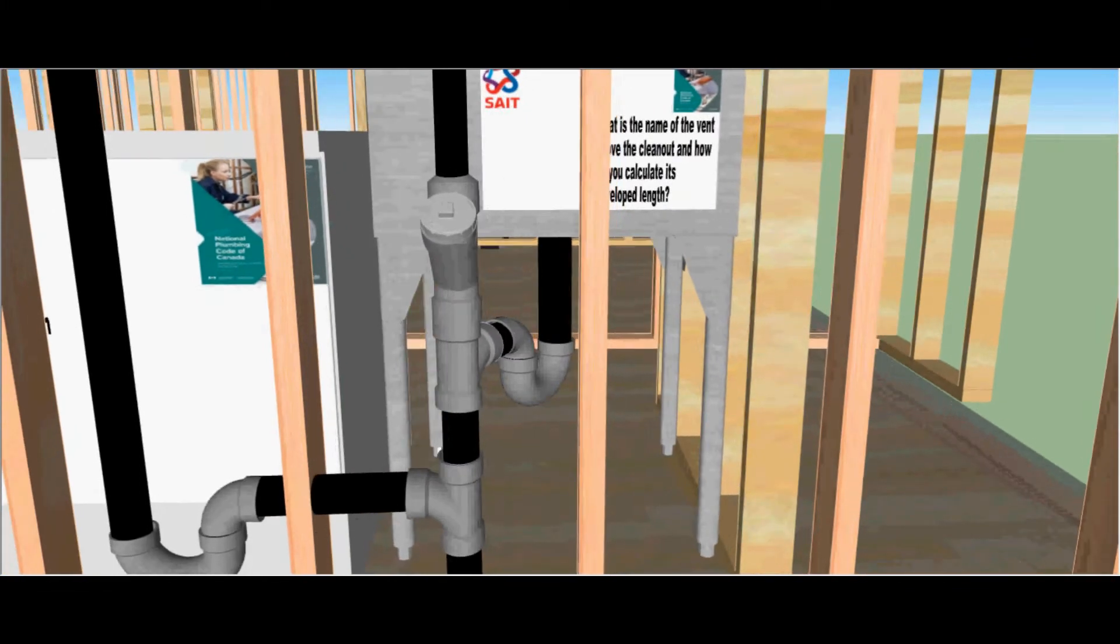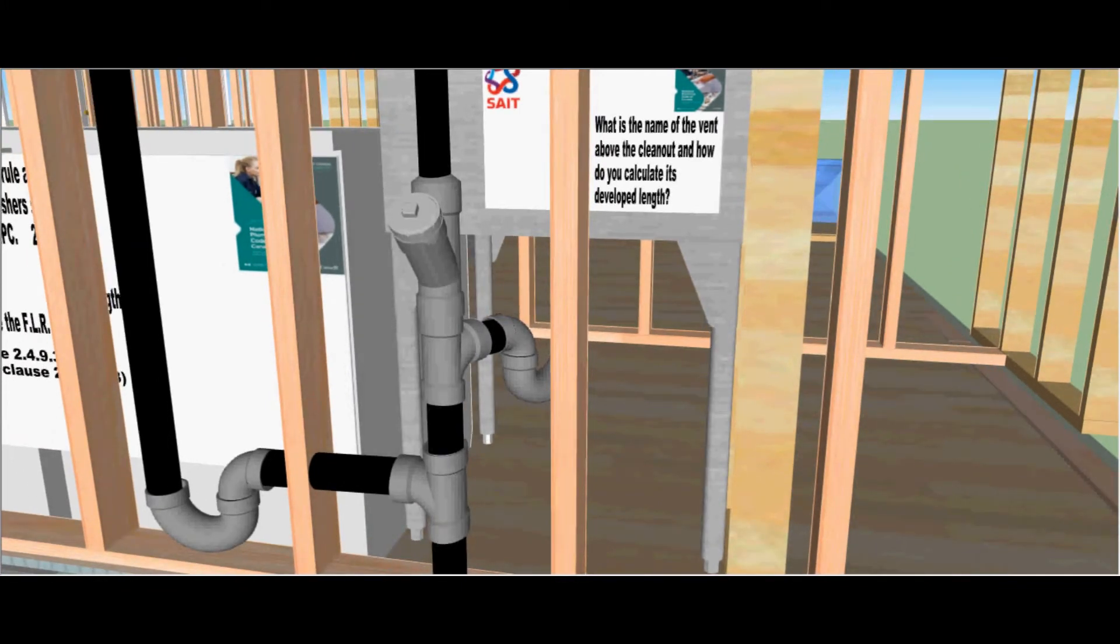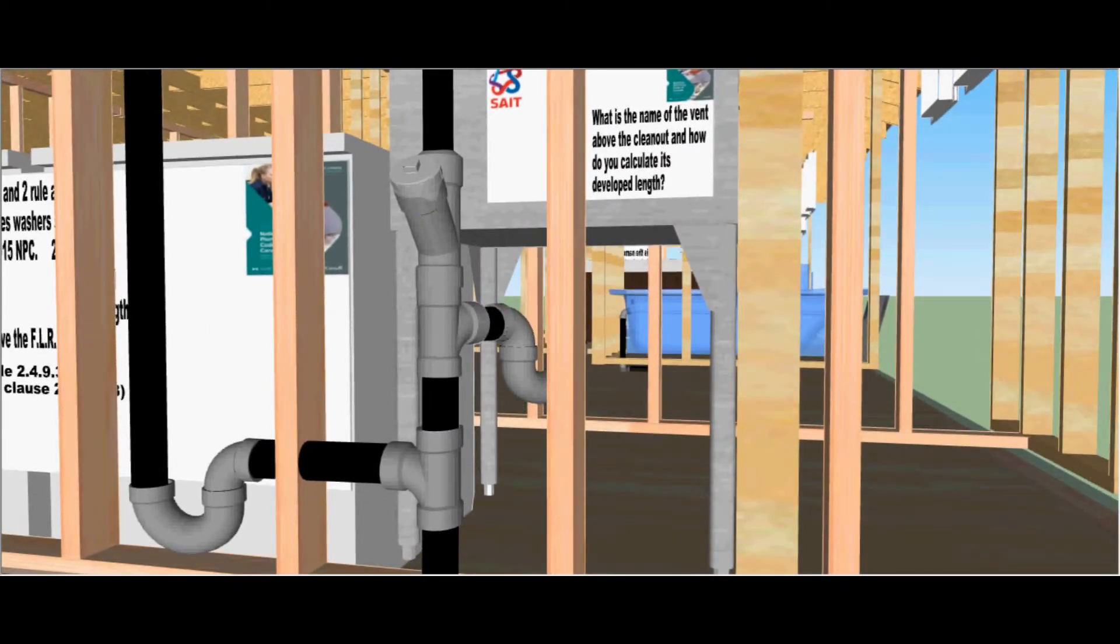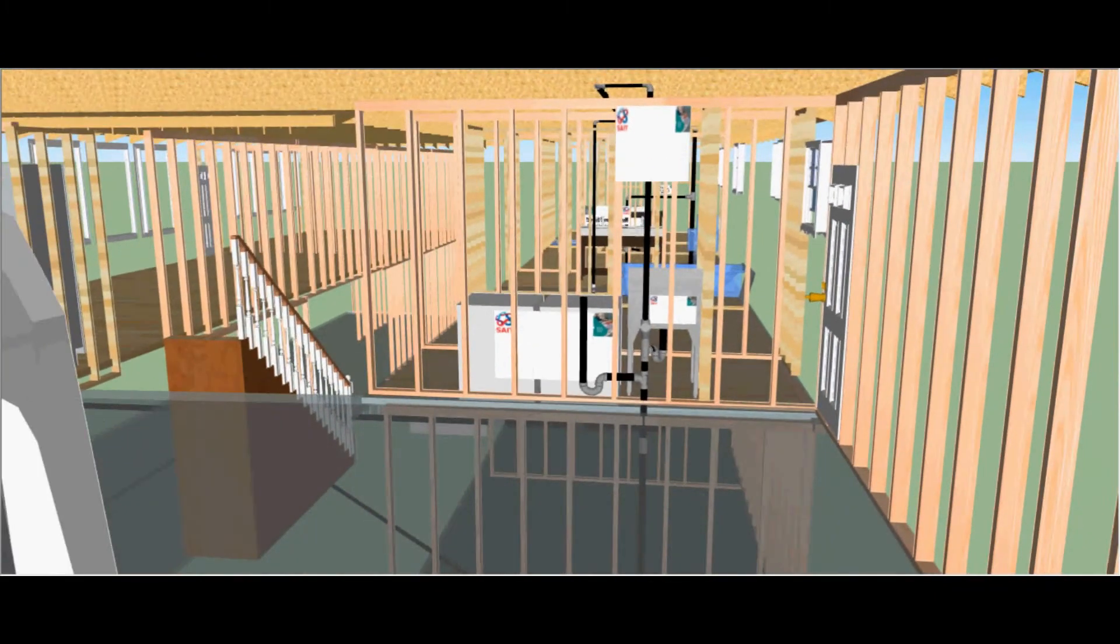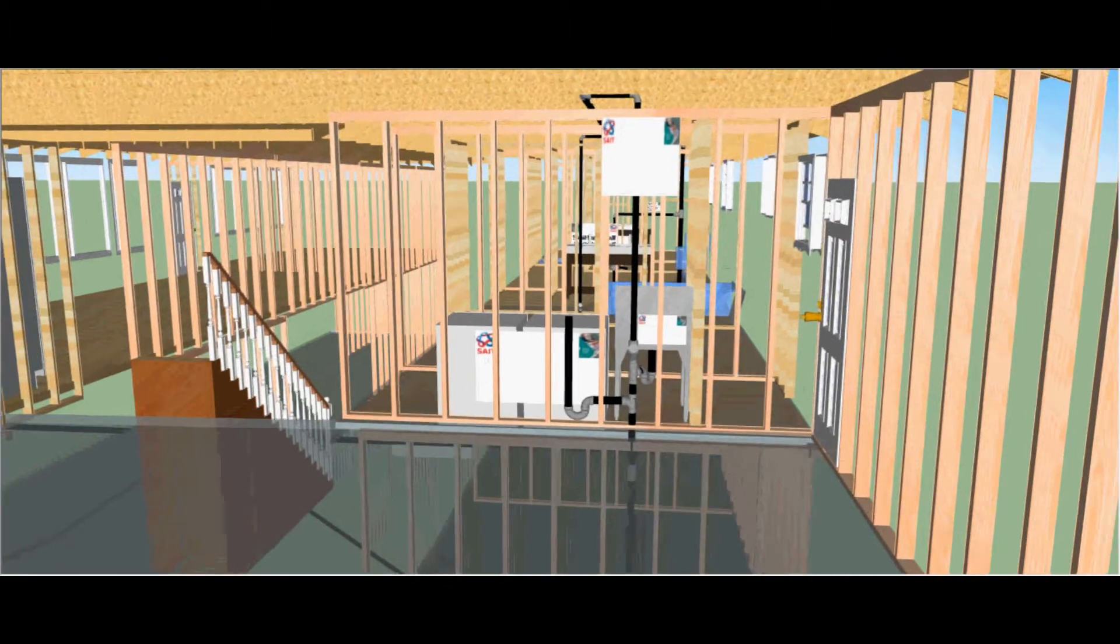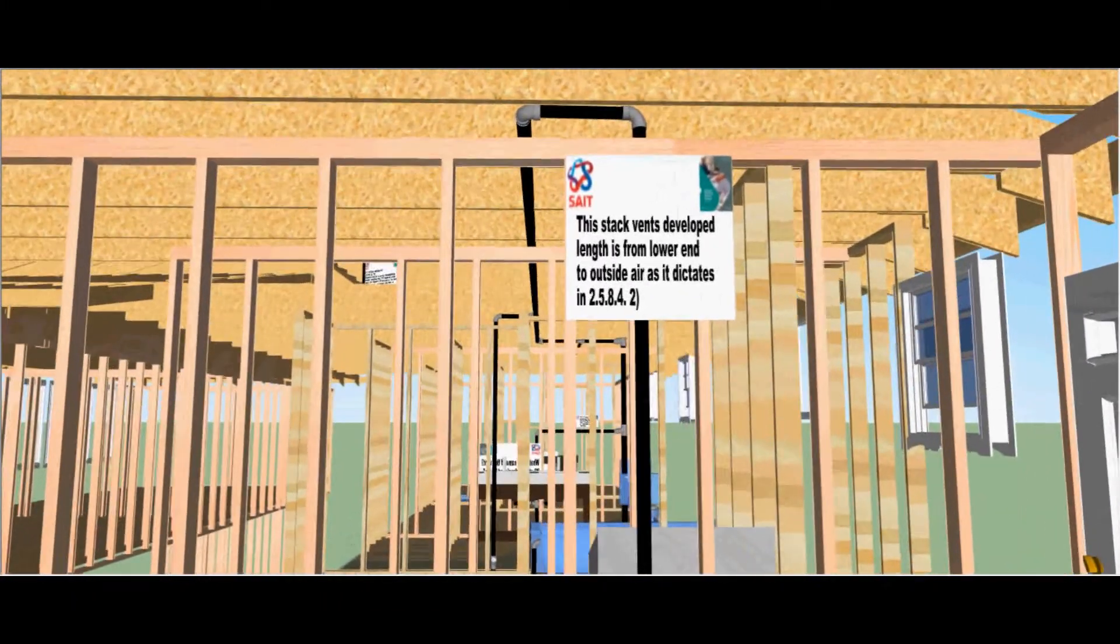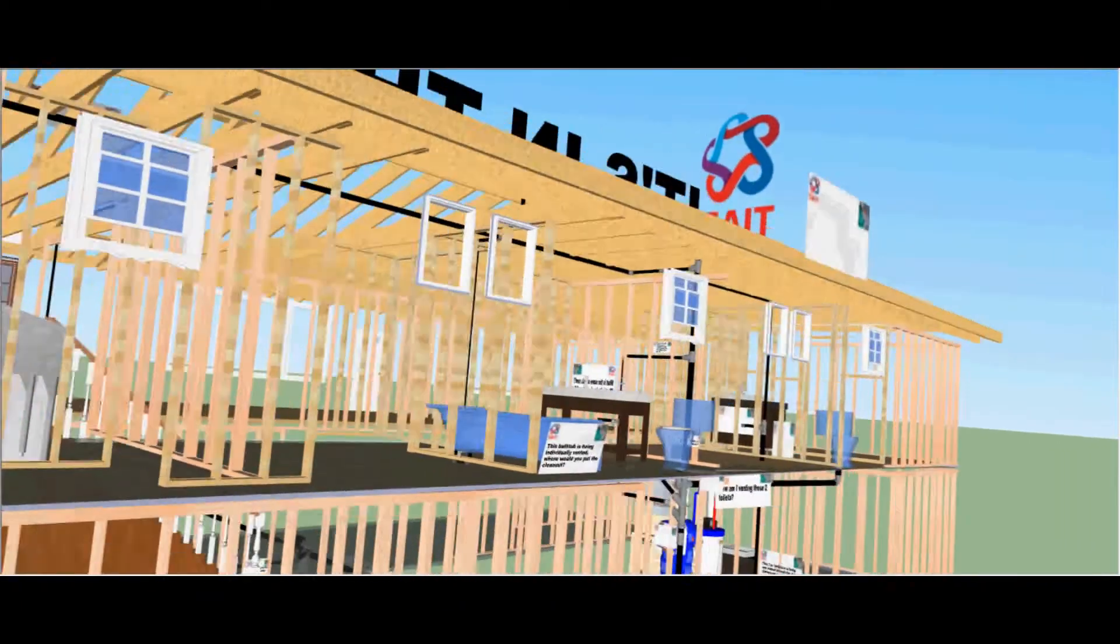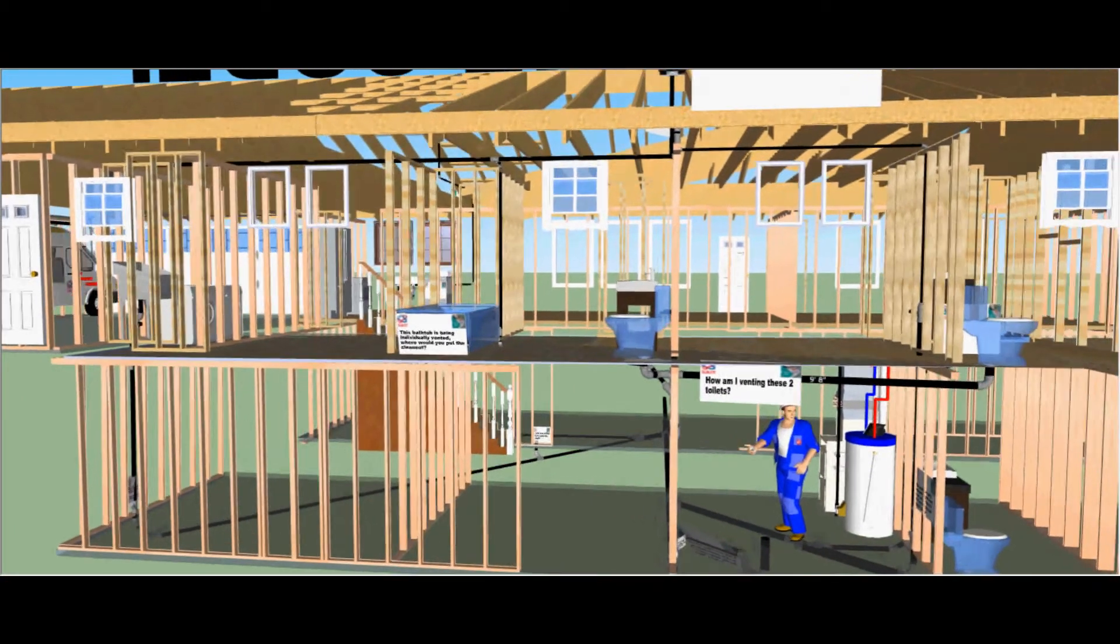What is the name of the vent above the clean out and how do you calculate its developed length? This is the vent serving the clothes washer machine and the laundry tub. As you can see it perforates through one or more storeys. This stack vent's developed length is from lower end to outside air as it dictates in clause 2584 subsection 2. So this developed length will go right to outside air to the vent terminal.